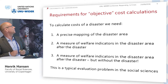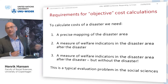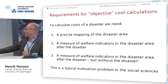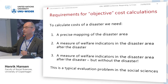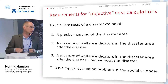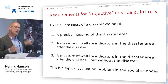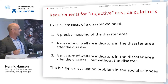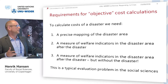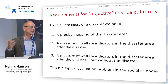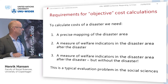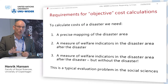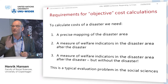To calculate the objective cost of a disaster, we need precise mapping of the disaster area without asking people — that's where scientists come in. We use their wind speed models. Then we need welfare indicators from household surveys, both inside and outside the disaster area, before and after the event. The missing counterfactual — welfare in the disaster area without the disaster — is addressed using difference-in-differences comparisons. We ask: can we see the cost of a disaster as an impact evaluation? We think we can.